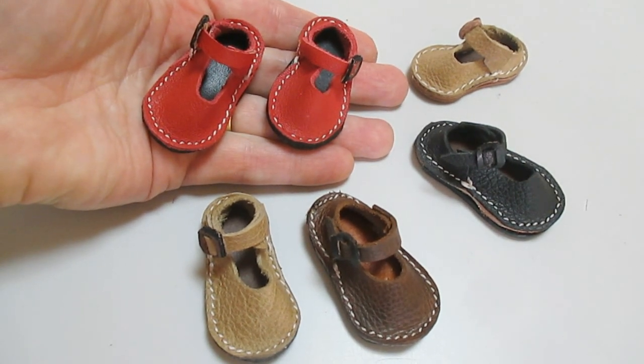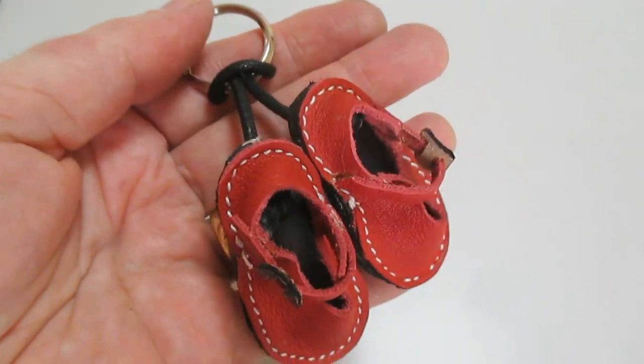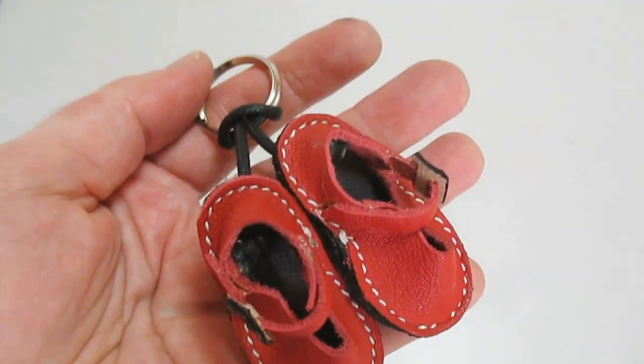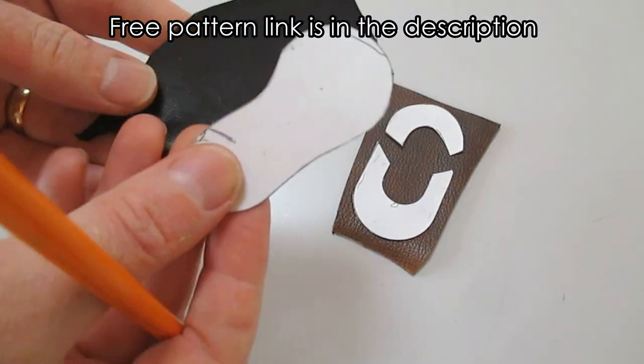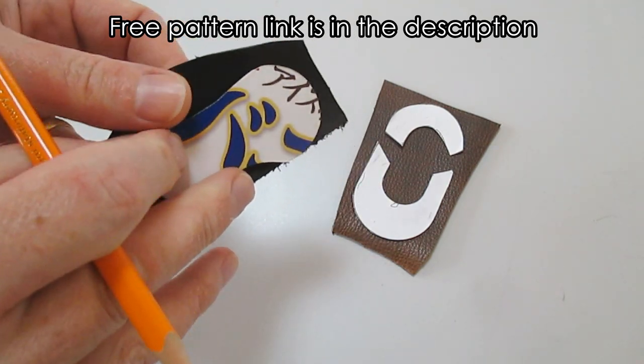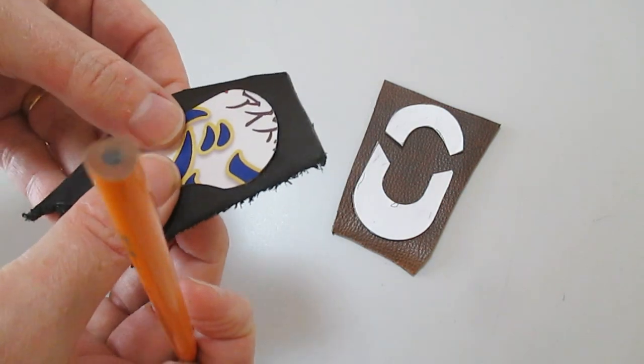You can make left and right feet just by flipping the templates. Trace around each pattern piece onto suitably thin leather. Remember to flip the sole piece so that it will match on the bottom of the shoe.